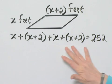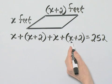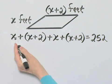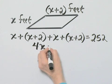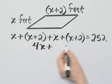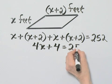Let's go ahead and simplify the left side. That's x plus x plus x, looking for like terms. 1, 2, 3, 4 x plus, and then 2 plus 2 is 4. That is 252.